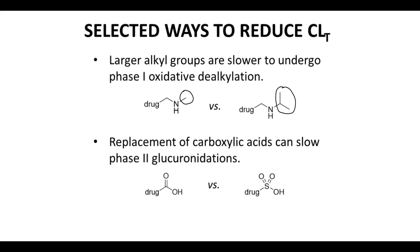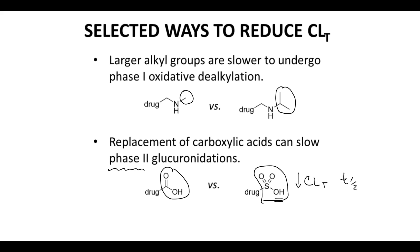In the second example, we're focusing on a phase two reaction — the glucuronidation of carboxylic acids. Carboxylic acids tend to rapidly undergo glucuronidation. Replacing the carboxylic acid with a sulfonic acid will tend to lead to slower conjugation of the OH group, slower glucuronidation, and a lower rate of clearance leads to extended half-life.